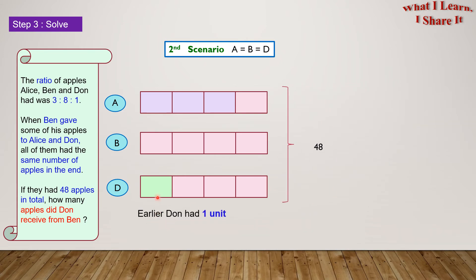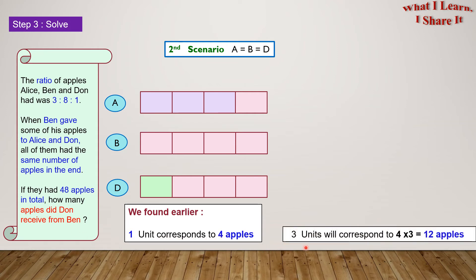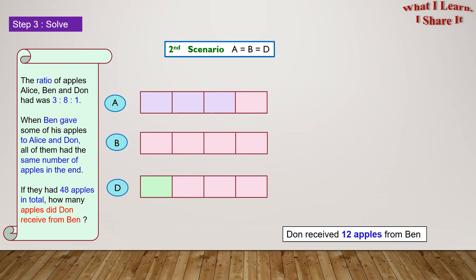Earlier, Don had 1 unit, but now he has 4 units. This means Don received 3 units from Ben. We found earlier that 1 unit corresponds to 4 apples. So 3 units will correspond to 4 times 3 equals to 12 apples. So Don received 12 apples from Ben.